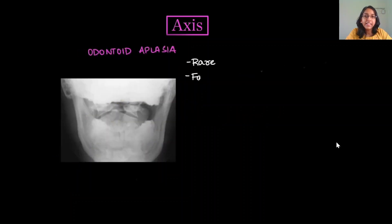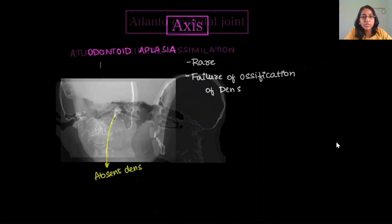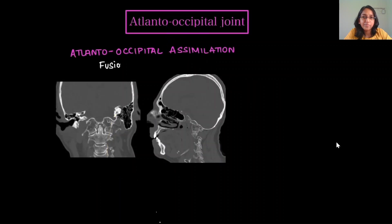Odontoid aplasia is rare and is due to failure of ossification of the dens itself. On X-ray, there is a blunted end with no odontoid process visible.